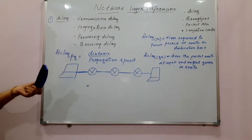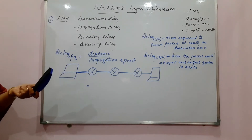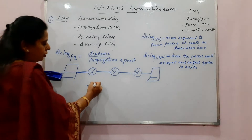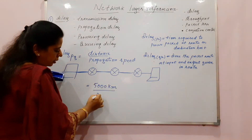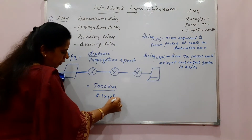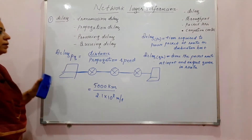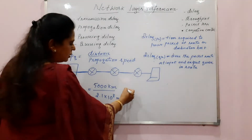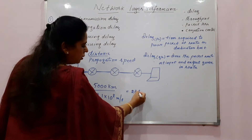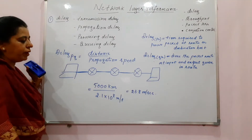For example, if the distance between sender and receiver is 5000 kilometers and the speed of the medium is 2.1 × 10⁸ meters per second, simply substitute the values into the formula. The propagation delay comes out to approximately 23.8 milliseconds.